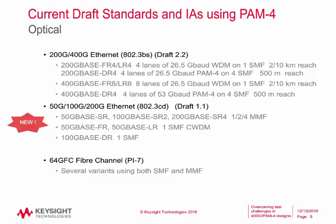Current draft standards and implementation agreements using PAM4 on the optical side include 200 and 400 gigabit Ethernet outlined in 802.3BS. Draft 2.2 was just posted earlier this month, so all of this information is fairly fresh — a couple of weeks old in terms of Ethernet and the OIF-CEI. A brand new draft 1.1 was just released in the last 10 days or so, covering 50 gig, 100 gig, and 200 gig.